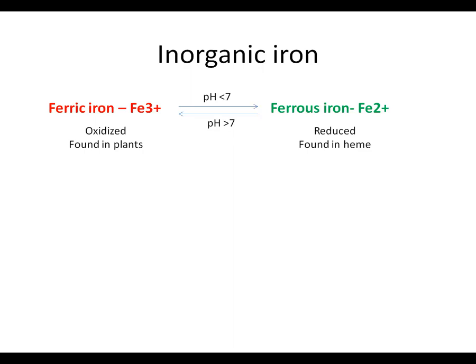So first of all, let's talk about inorganic iron. Iron exists in two different forms: the oxidized form and the reduced form. The oxidized form is called ferric iron, with the symbol Fe3+, and the reduced form is ferrous iron. I've put ferrous iron in green to emphasize that this is the form that we absorb most easily.